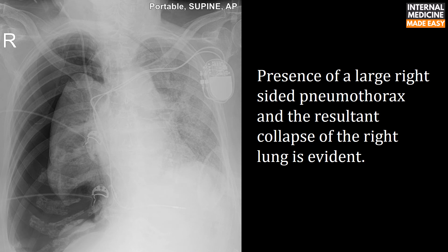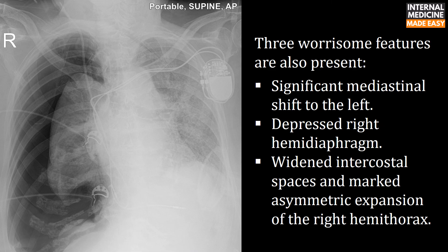In this X-ray, the presence of a large right-sided pneumothorax and resultant collapse of the right lung is evident. Three worrisome features are also present: significant mediastinal shift to the left, depressed right hemidiaphragm, and widened intercostal spaces with marked asymmetric expansion of the right hemithorax.